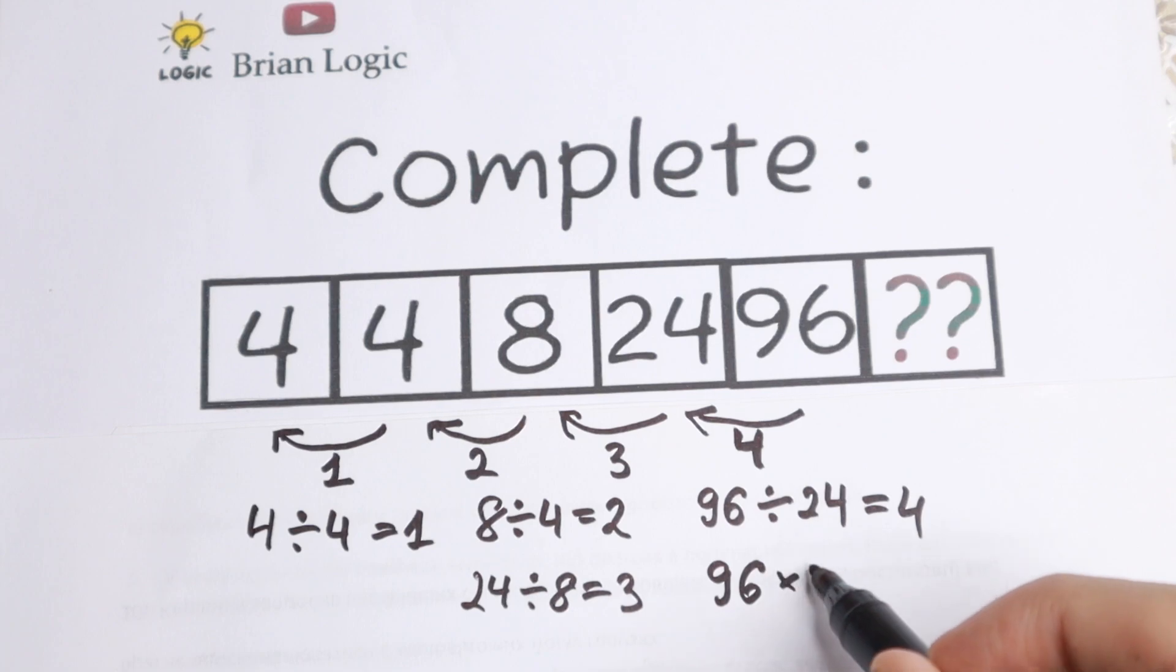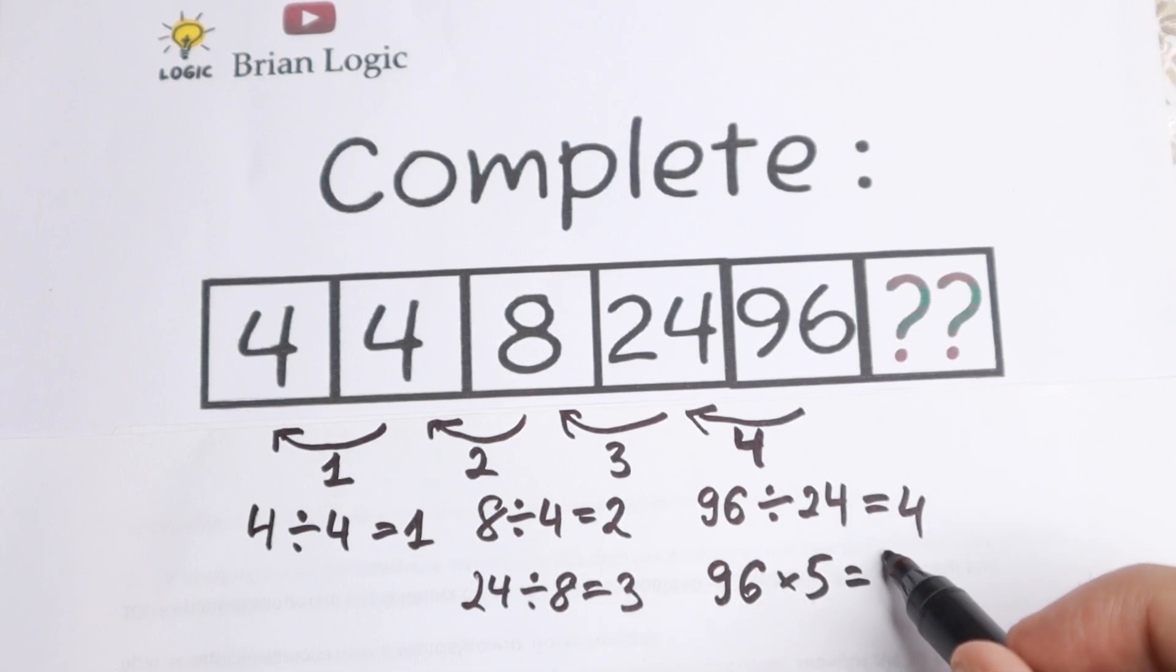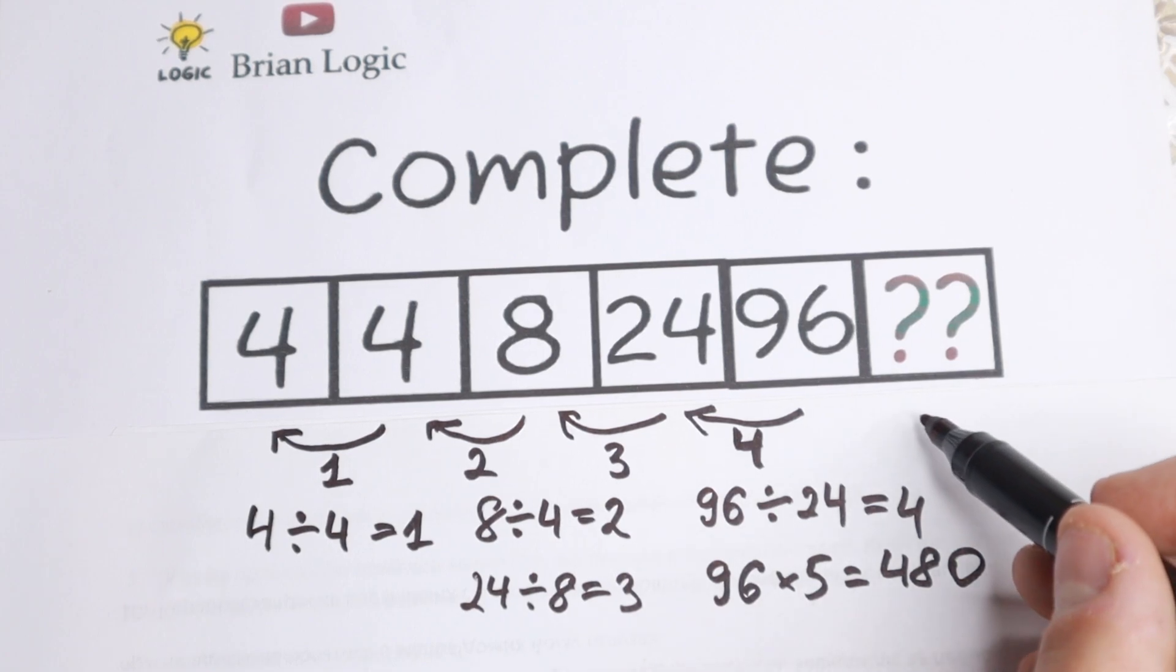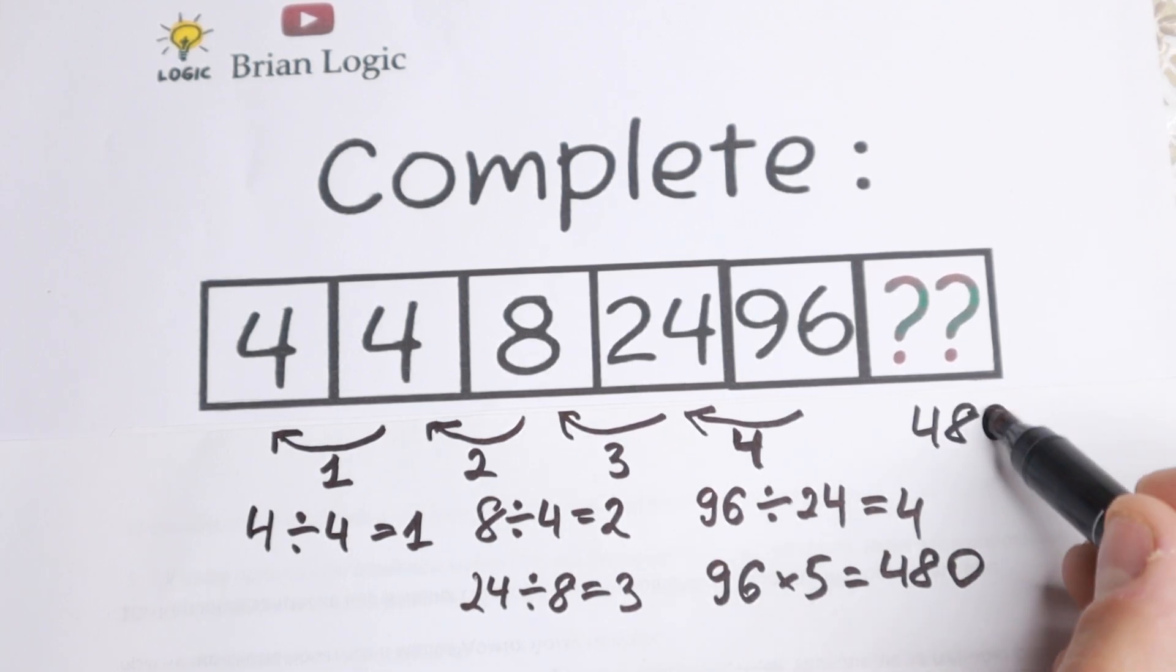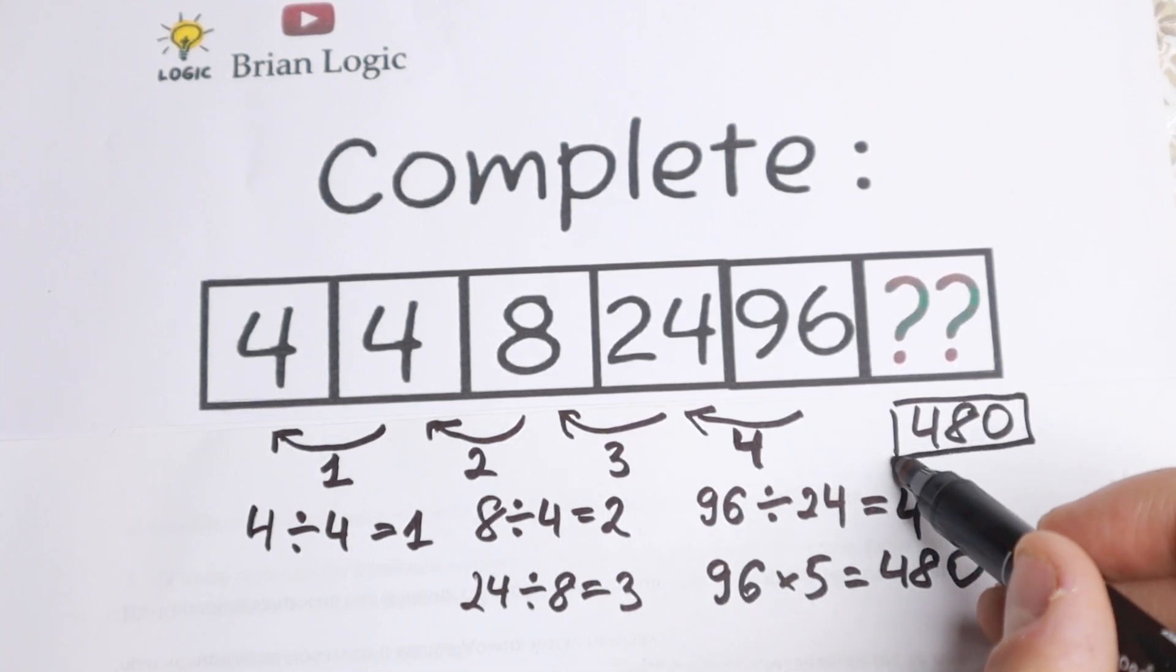So ninety-six times five, we will have four hundred and eighty. So our last number is four hundred and eighty. This is our answer.